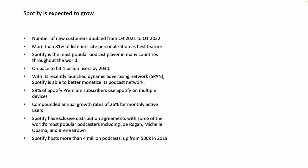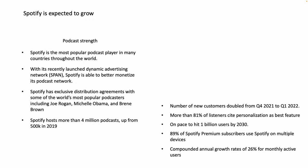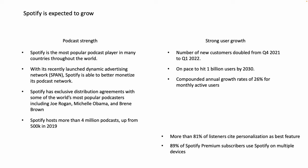If our main message is that Spotify is expected to grow, we need to think about what information we can use to support that message and how we can best organize it. Let's say we've gathered data points from various sources including investor presentations, annual reports, and expert interviews. The first step is to figure out how we can organize these data points into different categories. Reading through them, you can see a few themes emerge. Many of them are about podcasting, so let's take those and group them together and give them a summarizing title. A few are about growth in users, so we can put those together as well and add the title: strong user growth. The last couple don't really seem to have a place, so we'll leave them for now.